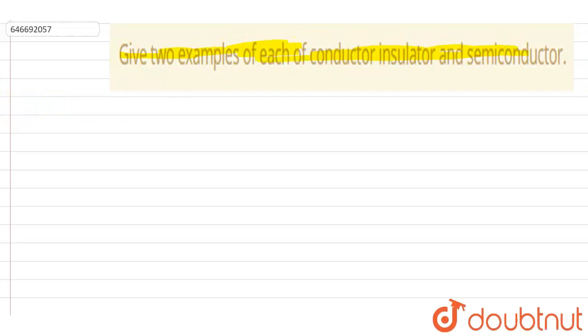If I talk about the conductor, we know that conductors are those materials which have free electrons to conduct the electricity. For example, iron, aluminum.